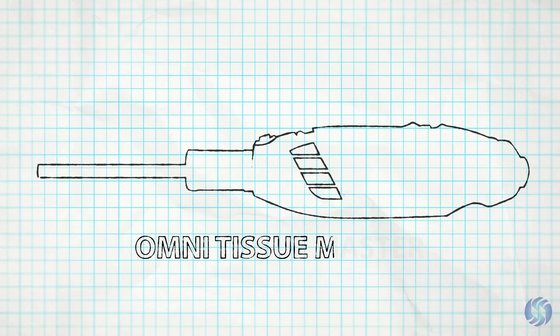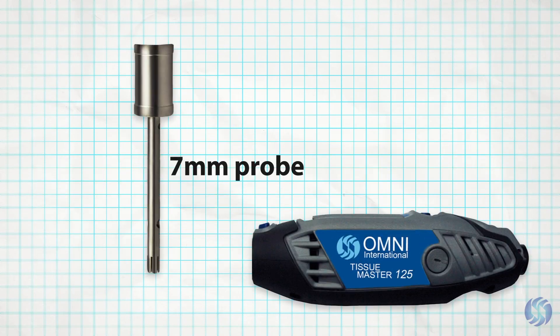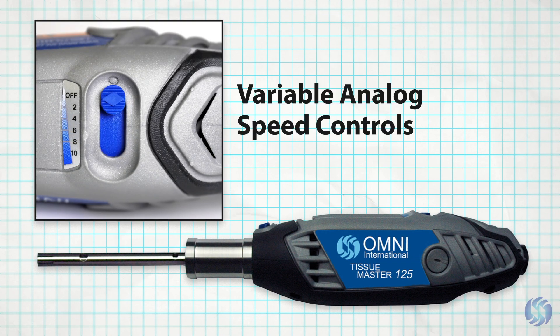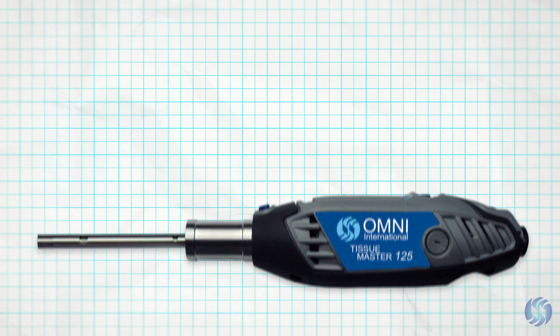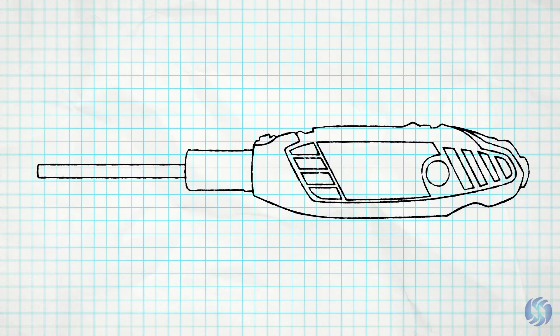The Omni TissueMaster is an economically priced homogenizer kit sold complete with a 7 millimeter probe. The TissueMaster incorporates variable analog speed controls and can process samples in up to 100 milliliters of volume. Designed for occasional use, the TissueMaster is an ideal solution for labs on a budget.